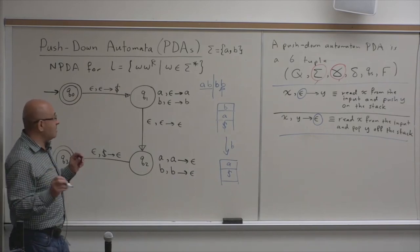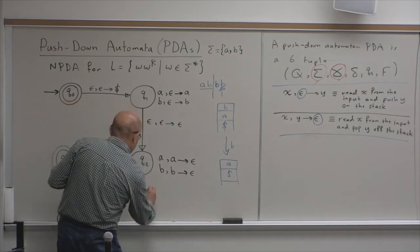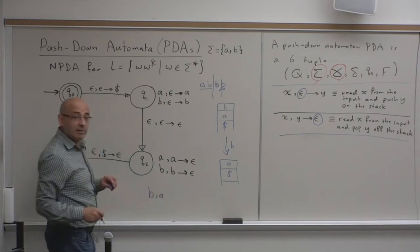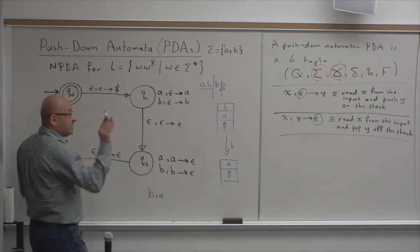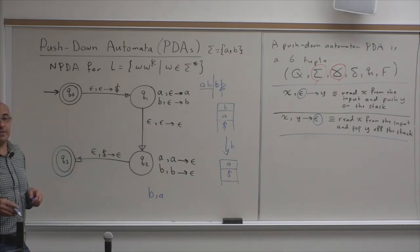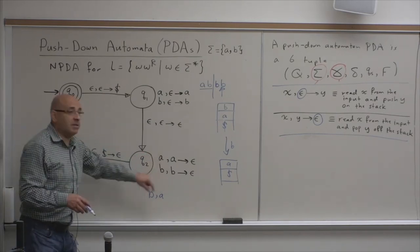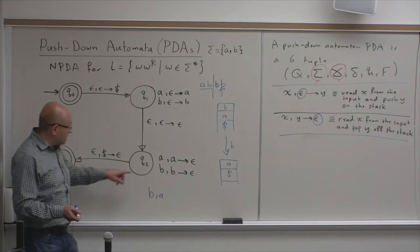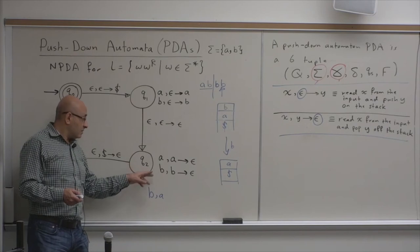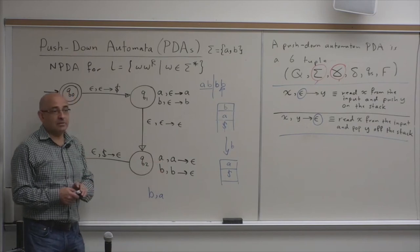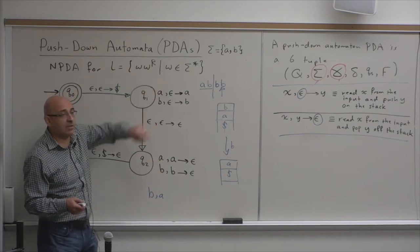Now, you have a B in the input, and you have an A at the top of the stack. So, you need a pair, a matching pair with what? B, A. Right? But you don't have B, A. So, B, A is reject. B, A go to a trap state. You have an A, and you have a B.